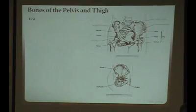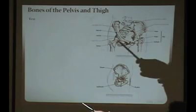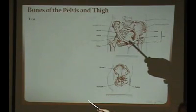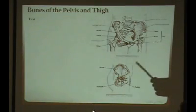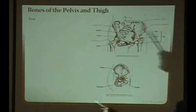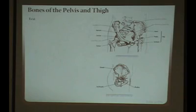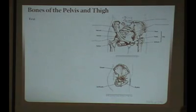Here's the obturator foramen, here's the pubic symphysis, pubic bone, here's your ischial tuberosity — be familiar with all those landmarks.